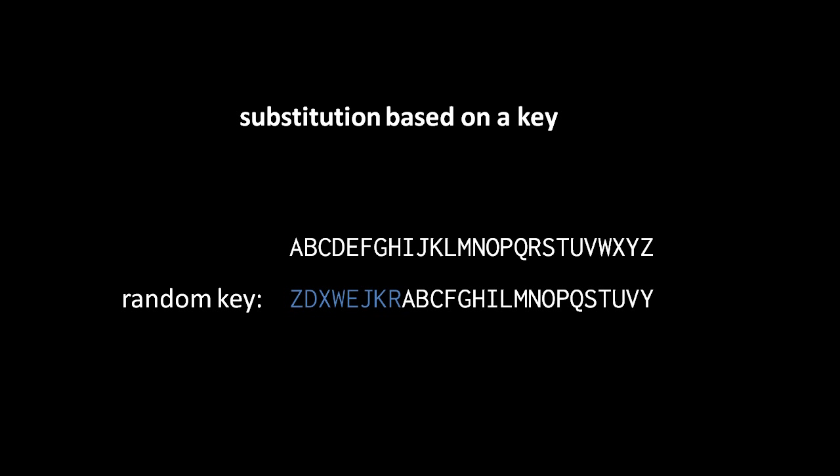So assuming you and I both have settled upon this mechanism for encryption, all I have to do is share with you the random key I've chosen, and then I can send you messages, and you can decrypt them with the same random key. You would just build your substitution table just like so. You'd line up the key first with the start of the alphabet, and then fill in the remaining letters, and then you get your substitution table.